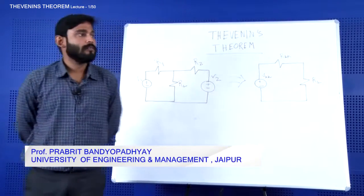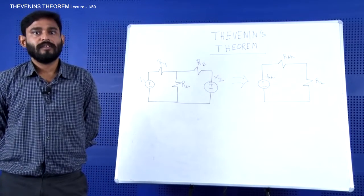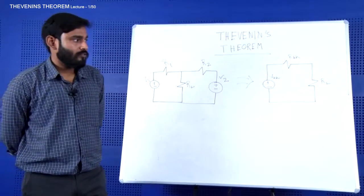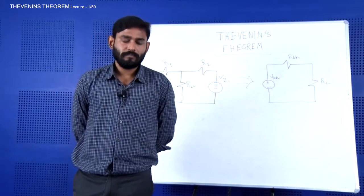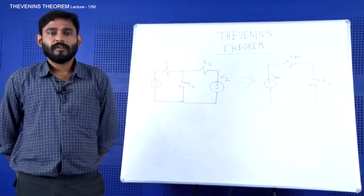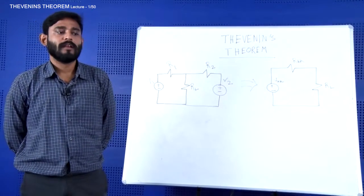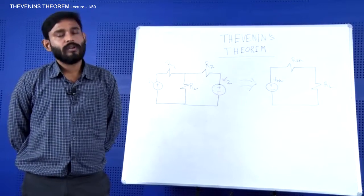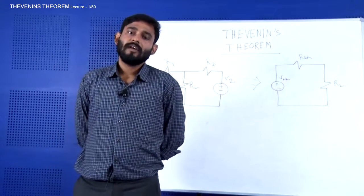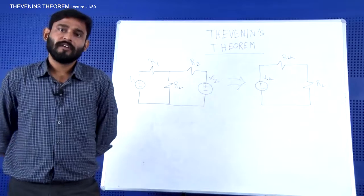Today the topic of our discussion is Thevenin's theorem, a very basic topic of network analysis and synthesis. It's an important topic for AC, DC, and any kind of network. The theorem states: any active network containing linear and bilateral elements can be replaced by an equivalent network containing only a voltage source, a load resistance, and another resistance representing the total internal resistance of the circuit — all connected in series.